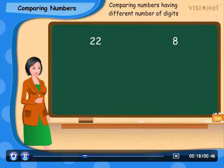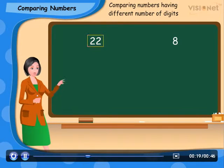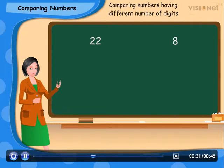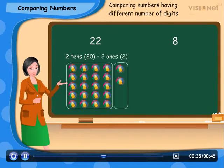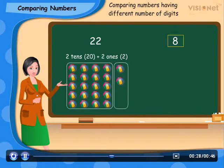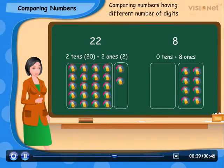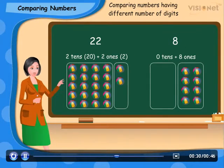Look at the number 22. It has two tens, 20, and two ones, 2. Whereas 8 has only 8 ones and no tens, 8.